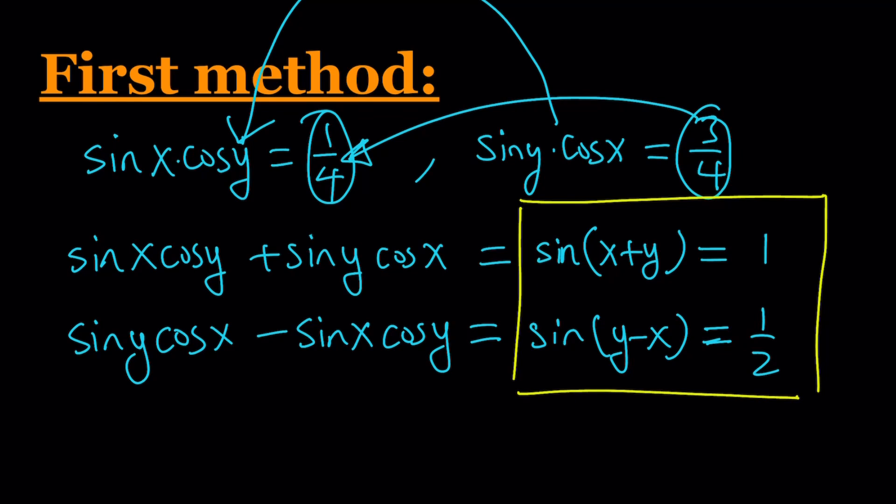Well, this basically gives us the possible x plus y and y minus x values. So we can come up with systems. So let's go ahead and write those systems down.